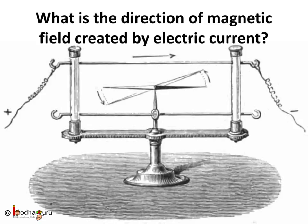Well, the simplest way of finding the direction of magnetic field associated with a current carrying conductor is the right hand thumb rule.